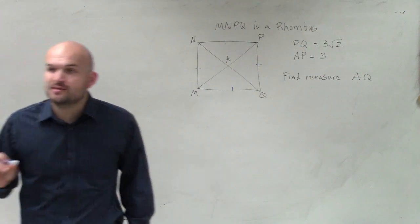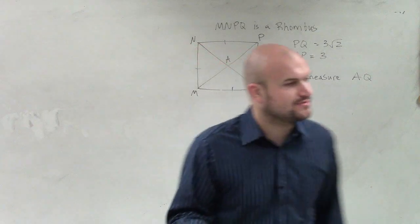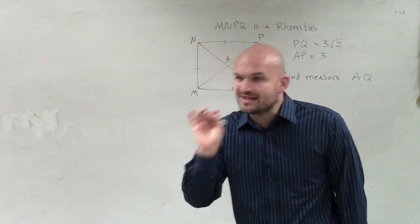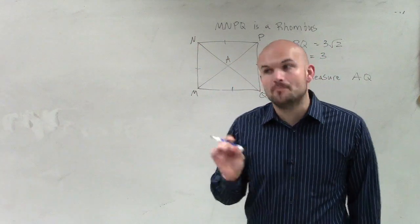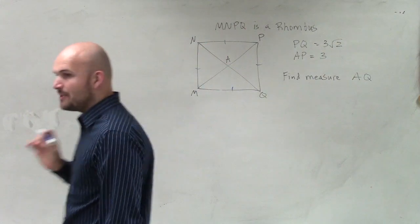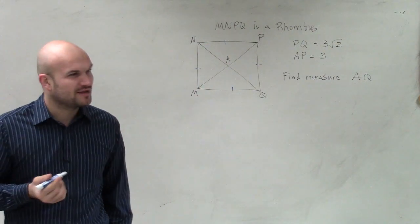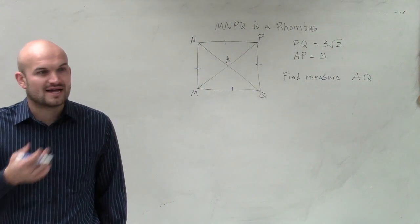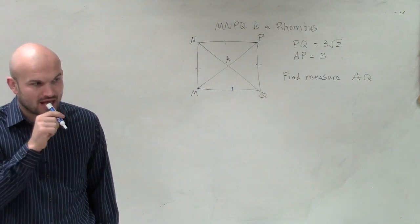But there was something that was very, very important about rhombuses, about their diagonals. Does anybody remember on their notes, what was very important about the diagonals of a rhombus? Yes, Blake? They're perpendicular.